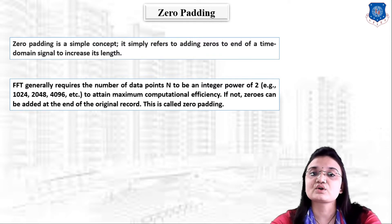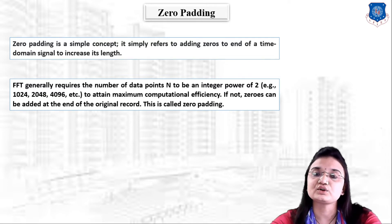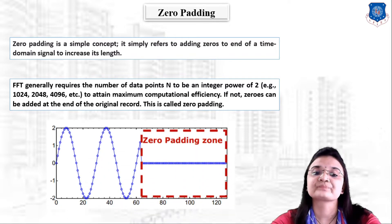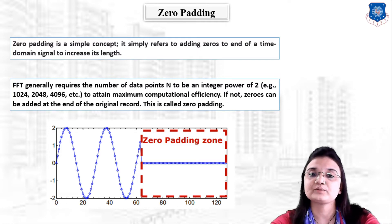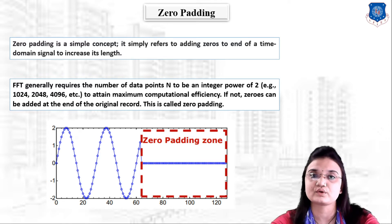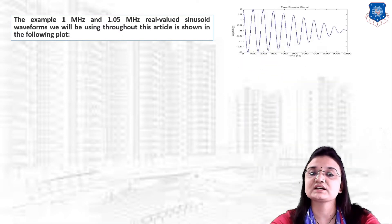If the number of data points N is not in the form of an integer power of 2, zeros can be added at the end of the original signal — that is known as zero padding. You can clearly see in this figure the zero padding zone, where zeros are added at the end of the time domain signal.